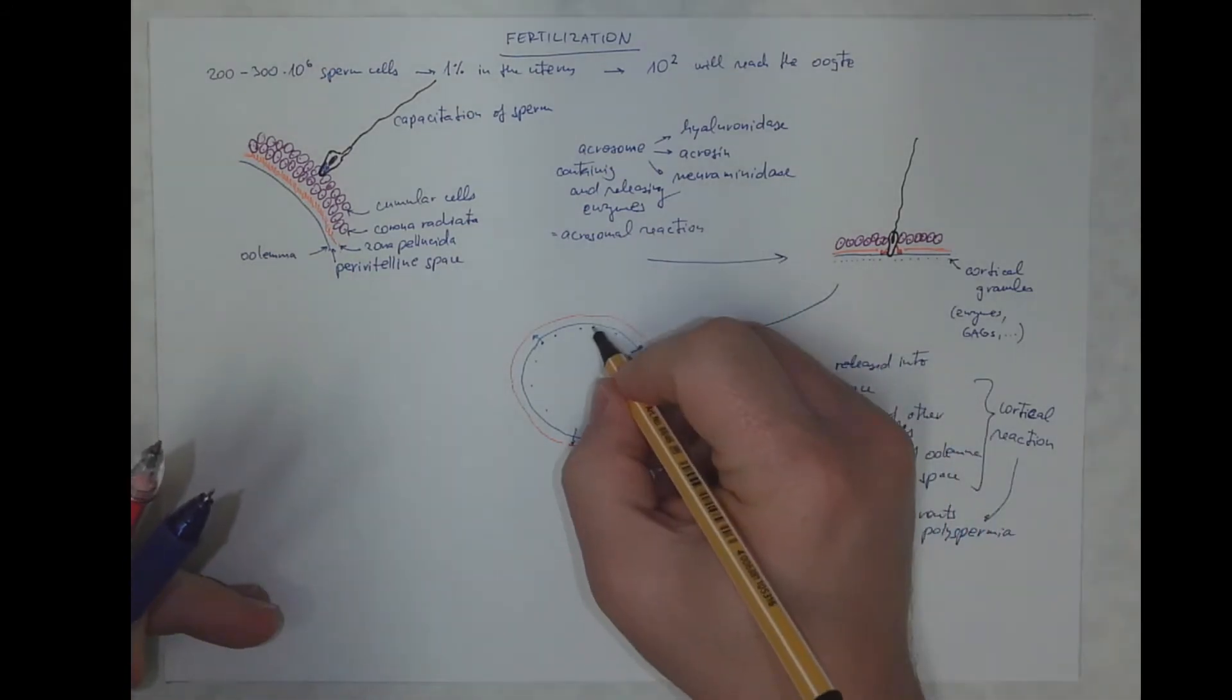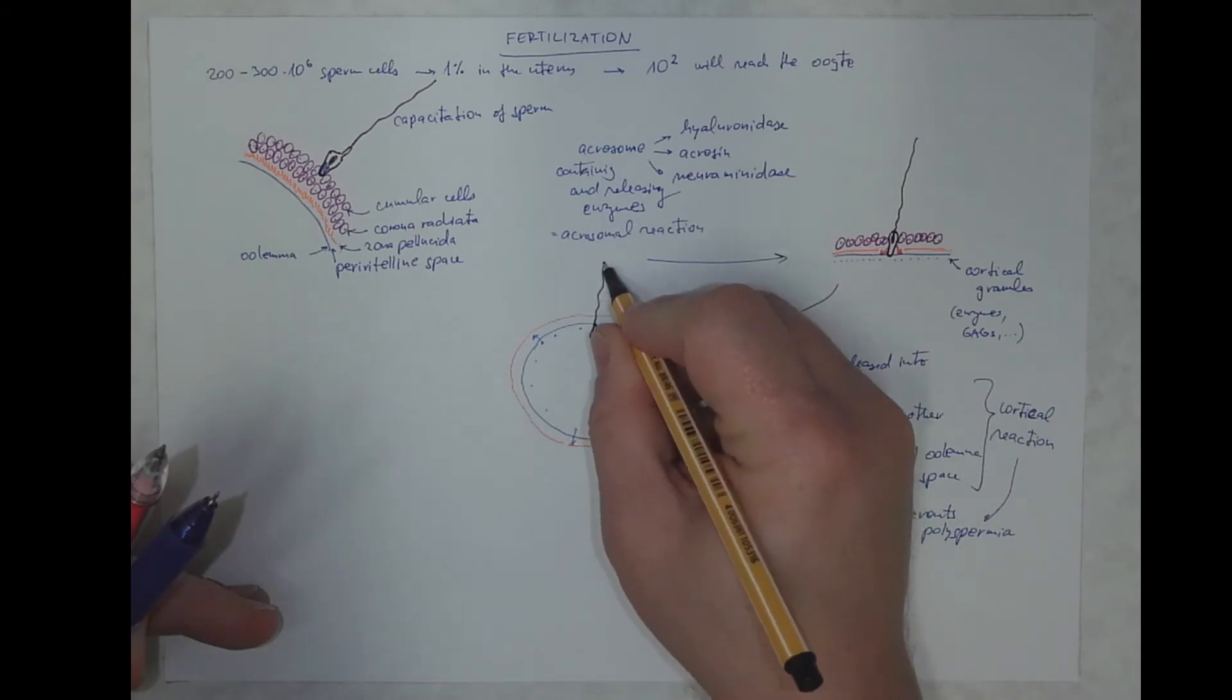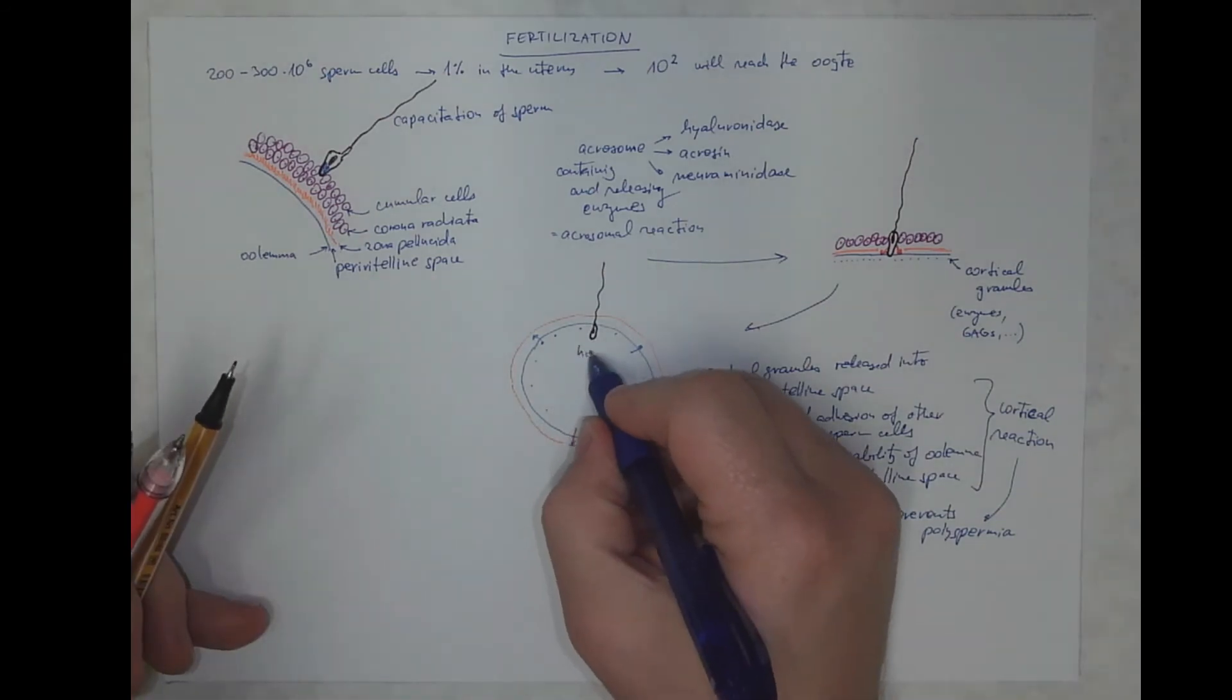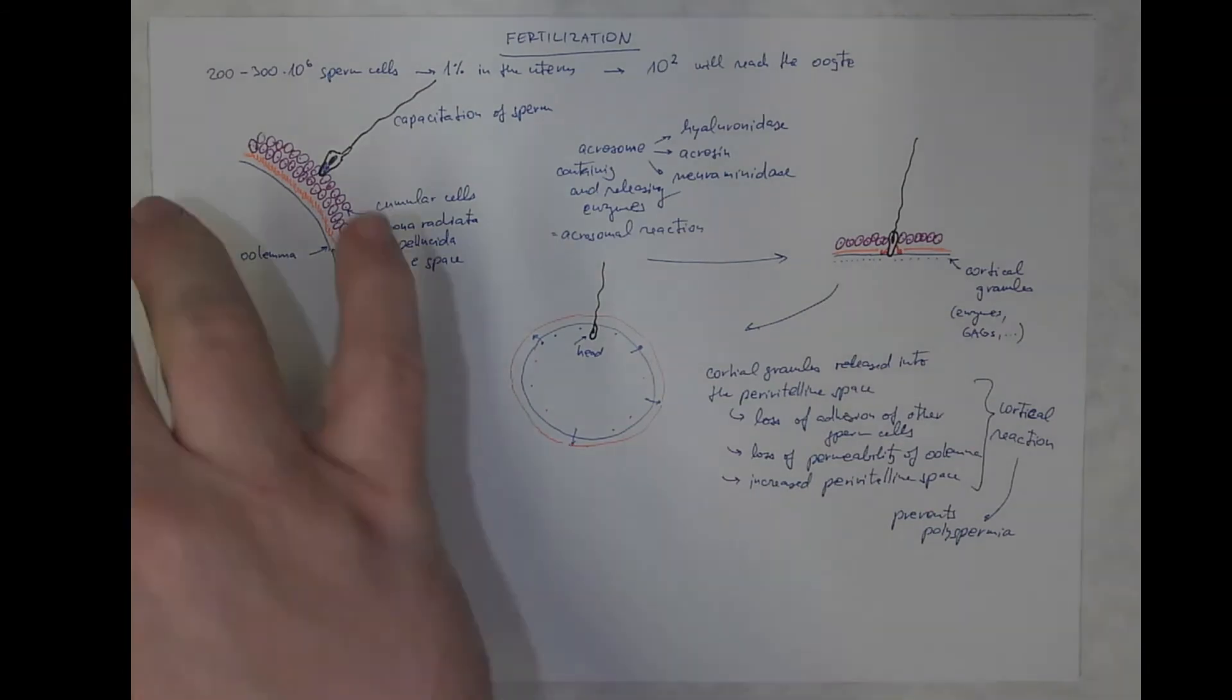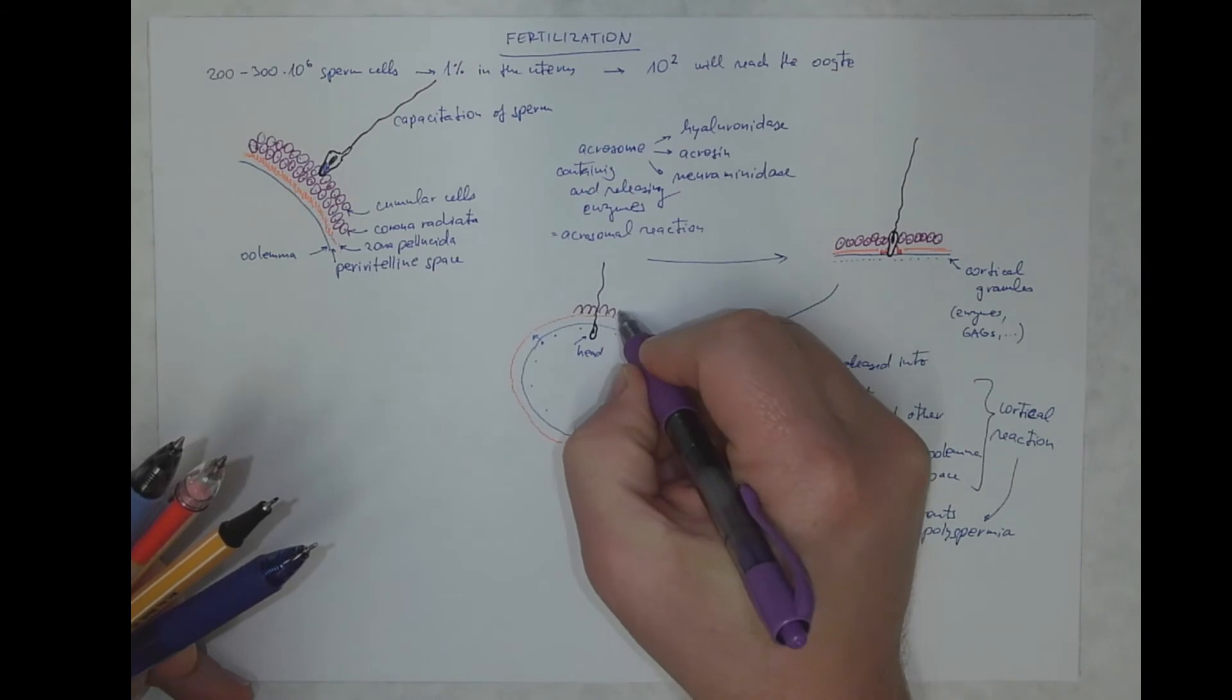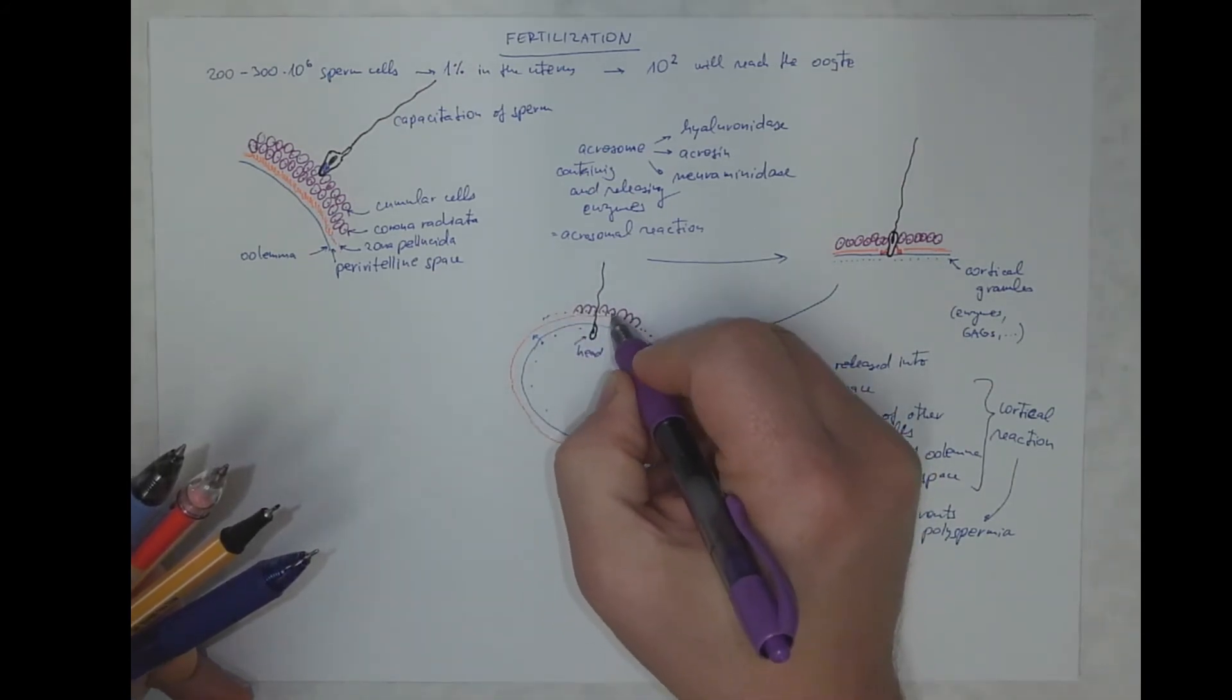So in this stage, we already have the head of the sperm cell inside. We got a zona pellucida and we got the corona radiata here, all around the circumference.